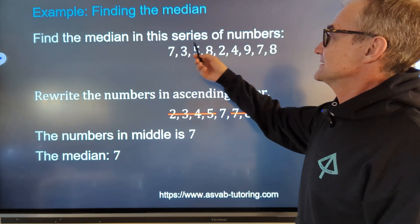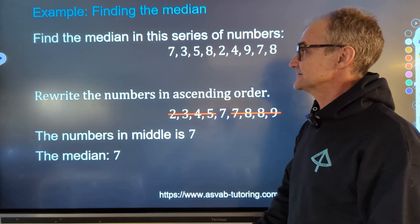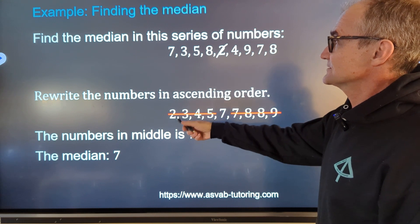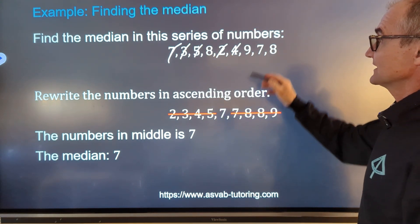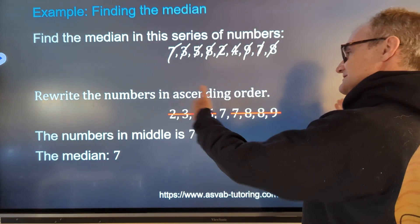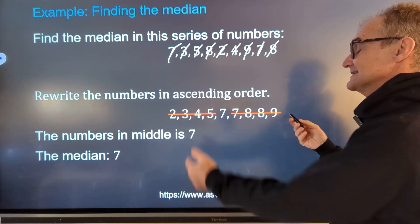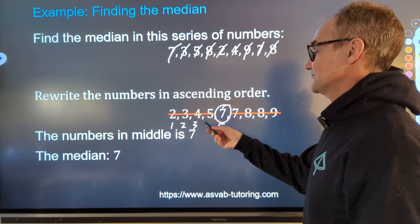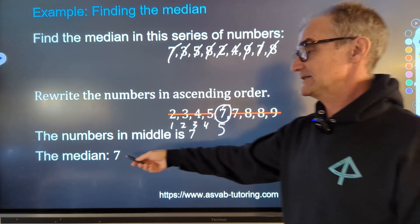Finding the median. The median is the middle number — just like the median of a freeway is in the middle. The first thing you do is put the numbers in numeric order. Here I have: two, three, four, five, seven, seven, eight, eight, nine. Now that they're in ascending order, I cross them out looking for the middle value. With nine values (an odd number), the middle value is the fifth value — that's seven. So the median is seven.